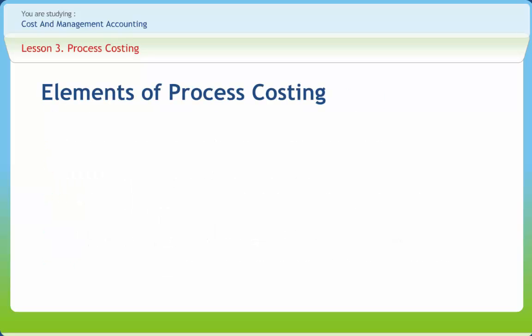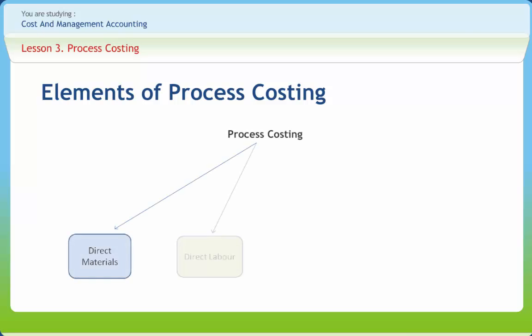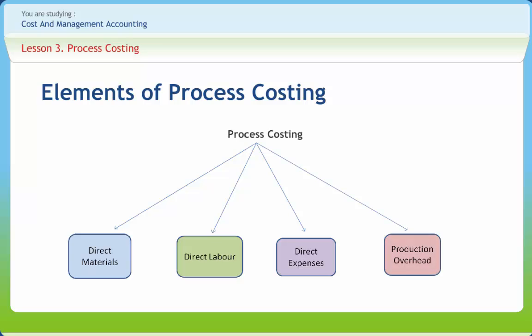The main elements of process costing are material and labor. In the system of process costing, the materials taken for consumption are to produce finished goods at the end of the final stage of the process, but not during the first stage of the manufacturing process. Direct labor is subject to the technology of the production process.